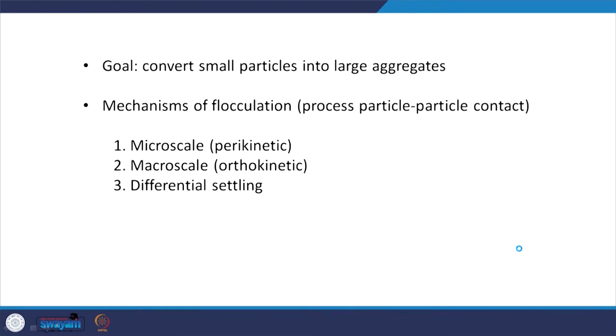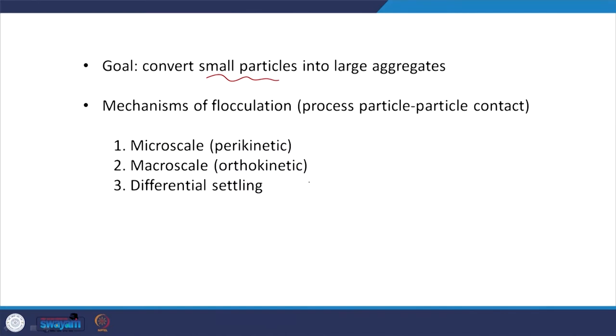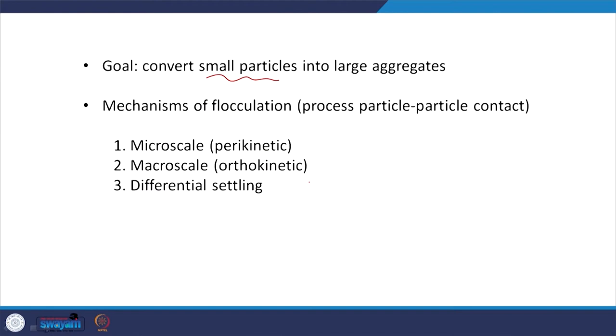Our goal is to convert smaller particles into bigger flocks. These particles have to come close together. Now they are no longer stable — they do not have that repulsive layer, or a relatively less thick repulsive layer. But they still need to come together. There are different ways: we looked at energy transfer from large eddies to smaller eddies and then to the microscale. The three mechanisms are: microscale (perikinetic), macroscale (orthokinetic), and differential settling.